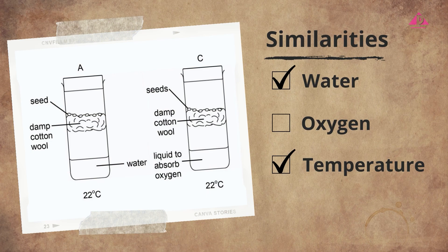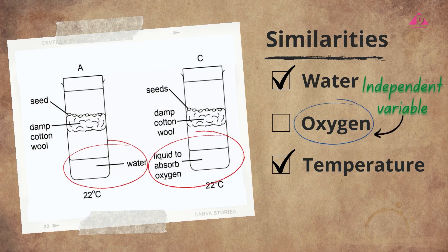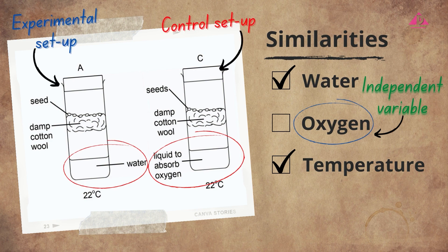This is the only difference between A and C. By comparing the results of A and C, we can find out whether oxygen is a factor affecting seed germination. Since setup C lacks oxygen, which is the independent variable, we can deduce that setup C is the control setup, while setup A is the experimental setup, when studying the effect of oxygen availability on seed germination.